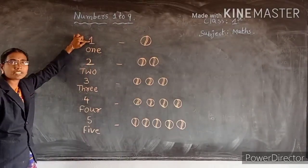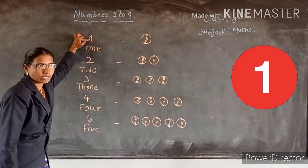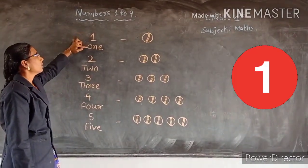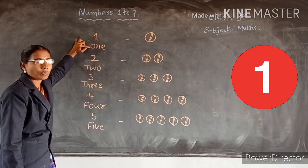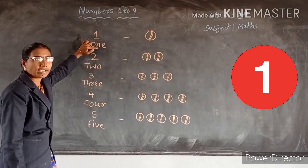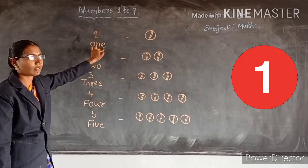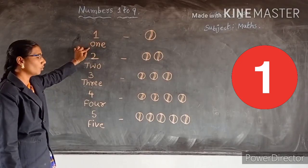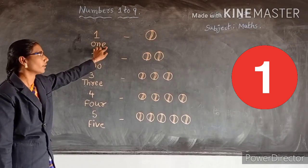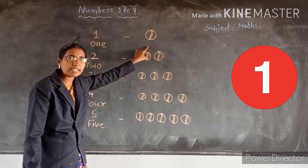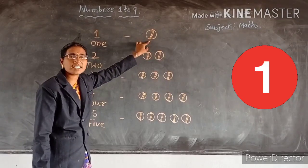What is this number, children? 1. What is this spelling? O, N, E. 1. How many pictures are there? Only one picture.